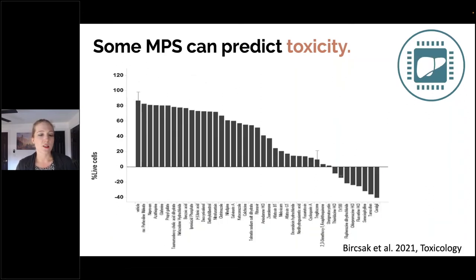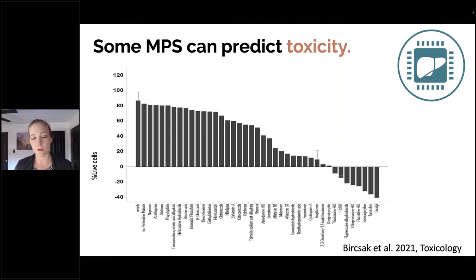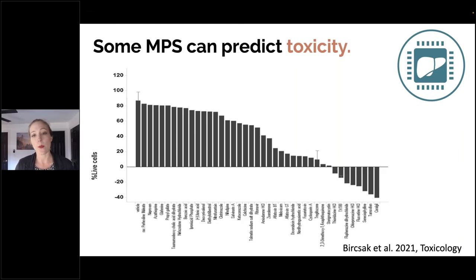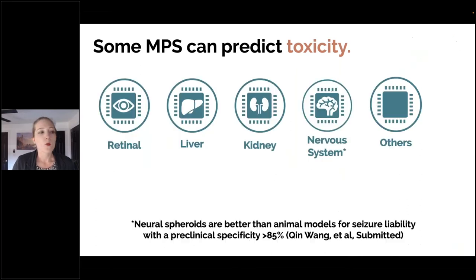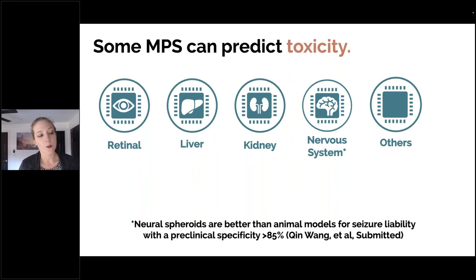Not only can an MPS say whether a particular drug is toxic or not at different concentrations, but you can also look across a range of drugs. For a liver MPS where 159 different compounds were tested, 49 had evidence of cytotoxicity and could actually be ranked from least to most toxic. Neural spheroids are better right now than animal models for looking at seizure liability for preclinical drugs, with a specificity of over 85%.